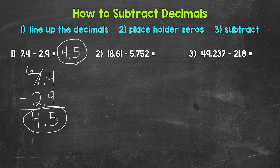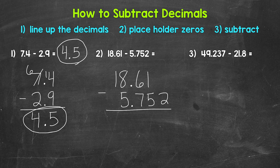Let's move on to number two, where we have 18 and 61 hundredths minus five and 752 thousandths. So let's line this problem up. Now we need to use placeholder zeros here. Notice that our problem looks a little offset, but we are actually lined up because our decimals are lined up, and therefore our places are lined up. It's just that 18 and 61 hundredths only goes to the hundredths place, and five and 752 thousandths goes to the thousandths, so it looks a little offset.